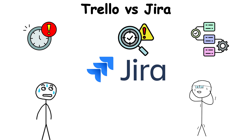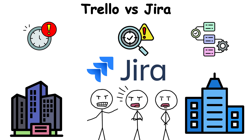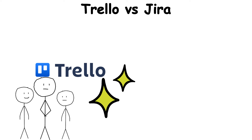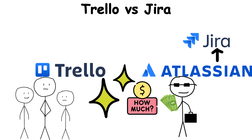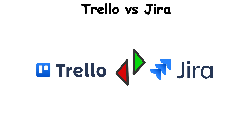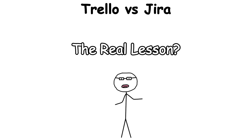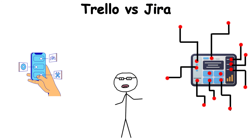Software companies run on Jira, but many employees groan at the complexity. Trello's charm was so strong that Atlassian, the same company behind Jira, bought it rather than compete. Open clones of Trello keep the simplicity alive today, giving anyone a lightweight alternative to Jira's heavy-duty cockpit. The real lesson? Sometimes the simplest board beats the enterprise dashboard full of buttons.